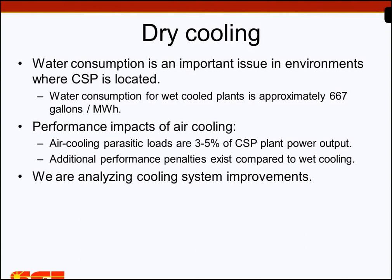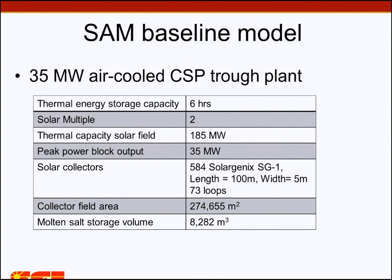Because of this, most CSP plants are moving towards dry cooling systems. That's good for water use, but there are some performance impacts. First, there are parasitic loads for air cooling — because you're pushing air instead of pumping water, parasitic loads are somewhere around three to five percent of power output, whereas wet cooling would be much lower, maybe around one percent. Additionally, there are performance penalties because you can't achieve as cold condensing temperatures with dry cooling as with wet cooling.